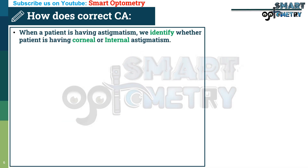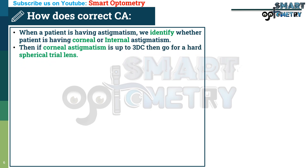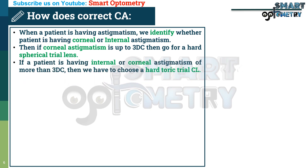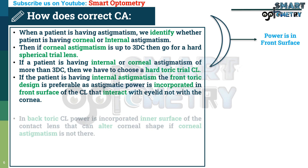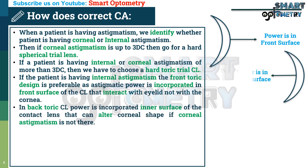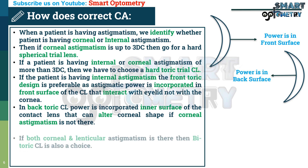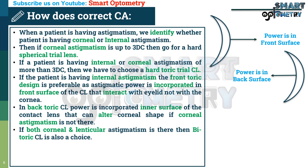So in contact lens practice, when a patient has astigmatism, we must identify whether they have corneal astigmatism or internal astigmatism. If corneal astigmatism is up to 3 D cylinder, go for a hard spherical trial lens. If the patient has internal astigmatism or corneal astigmatism of more than 3 D cylinder, choose a hard toric trial lens. If the patient has internal astigmatism, a front toric design is preferable, as the astigmatic power is incorporated in the front surface of the contact lens that interacts with the eyelid, not with the cornea. In back toric contact lenses, power is incorporated in the inner surface, which can alter corneal shape if corneal astigmatism is not present. If both corneal and internal astigmatism are present, a bitoric contact lens design is also available.